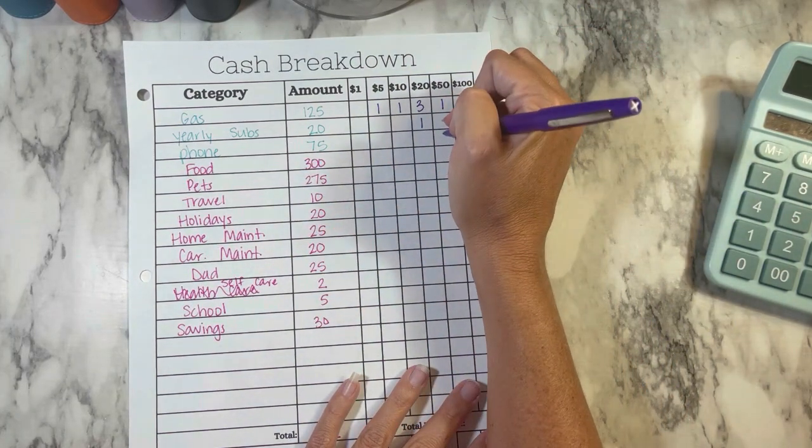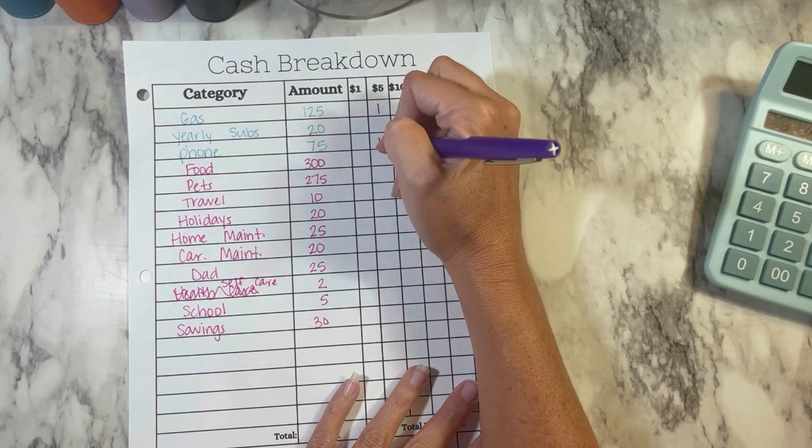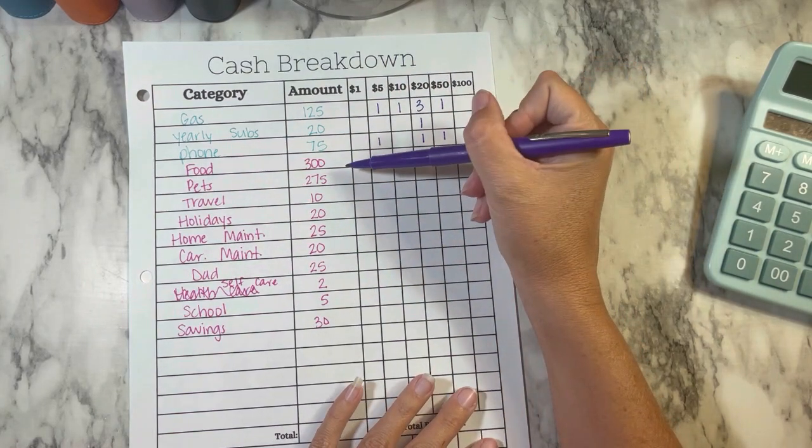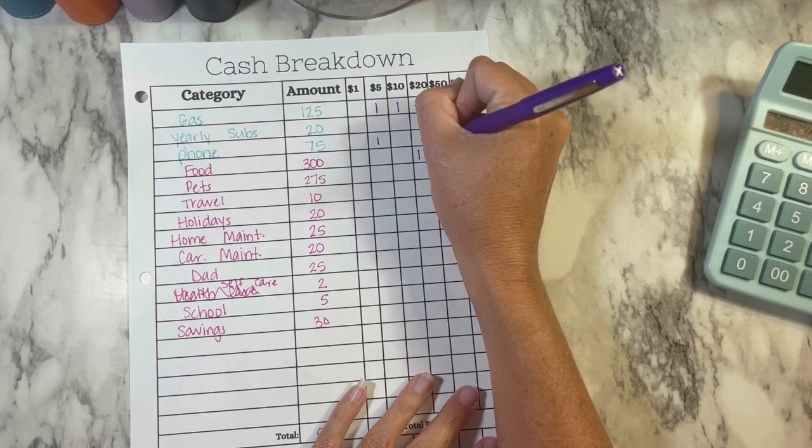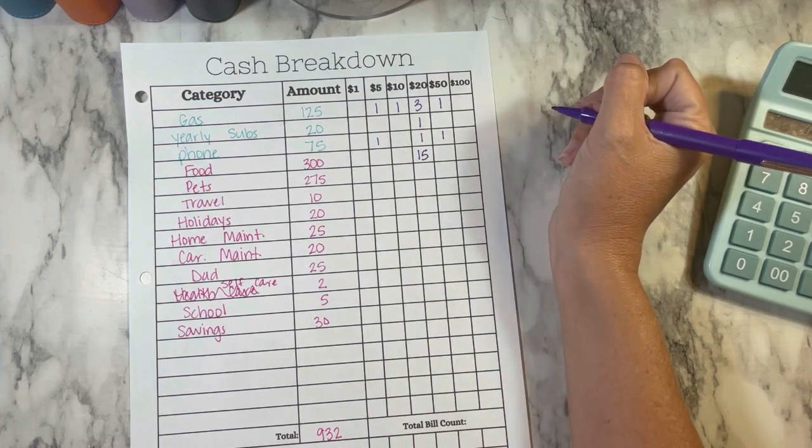Phone is $75, so we're going to do a $50, a $20, and a $5. Food is $300, and I'm going to do all $20s. So that is fifteen $20s.